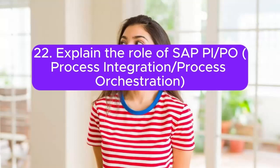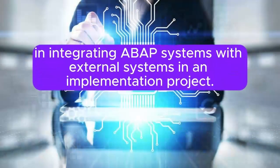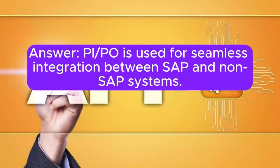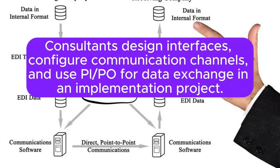Question 22: Explain the role of SAP PI/PO (Process Integration / Process Orchestration) in integrating ABAP systems with external systems in an implementation project. Answer: PI/PO is used for seamless integration between SAP and non-SAP systems. Consultants design interfaces, configure communication channels, and use PI/PO for data exchange in an implementation project.